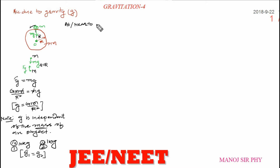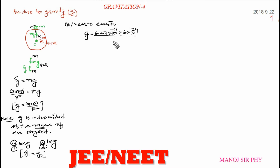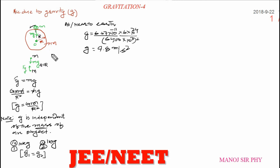Near to the surface of Earth, acceleration due to gravity can be calculated. G is 6.67 × 10⁻¹¹, mass of the Earth is 6 × 10²⁴ kg, and radius of the Earth is 6400 km, which equals 6.4 × 10⁶ m. When you solve it carefully, you get approximately 9.8 m/s².